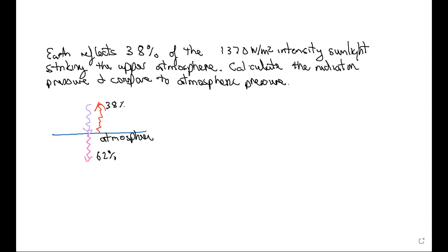We're thinking about the upper atmosphere and sunlight being reflected and absorbed by the upper atmosphere, and the resulting radiation pressure. In this problem we're told that the Earth's atmosphere reflects about 38 percent of the incident sunlight and absorbs the remainder — about 62 percent of the incident sunlight. Here in magenta is the sunlight striking the Earth's atmosphere, with 38 percent being reflected back into outer space and 62 percent being absorbed and warming the Earth.